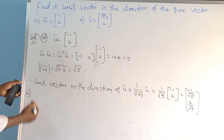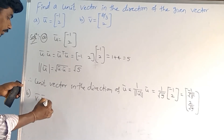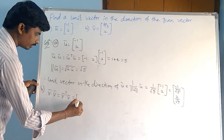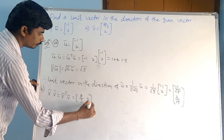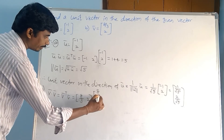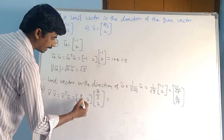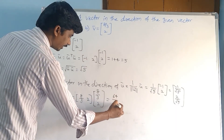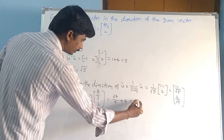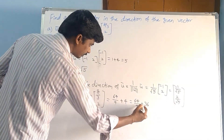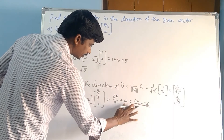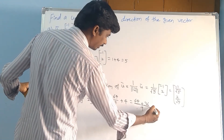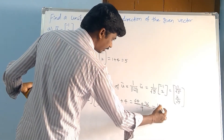Solution B is similar. We compute v̅ dot v̅, which is v̅ transpose into v̅: (8/3, 2) times (8/3, 2). That equals (8/3)(8/3) plus (2)(2), which is 64/9 plus 4. That equals 64/9 plus 36/9, giving us 64 plus 36 by 9, which equals 100/9.